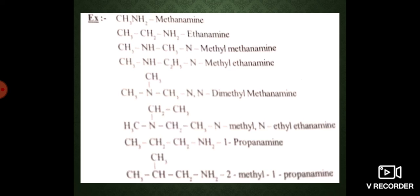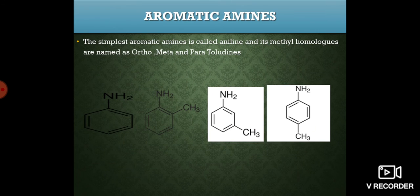Where an amino group is combined with propane, it is called 1-propanamine. And when the amino group is combined with 2-methylpropane at the second carbon — with propane's second carbon containing one methyl group — it is called 2-methyl-1-propanamine. This completes IUPAC naming of aliphatic amines.